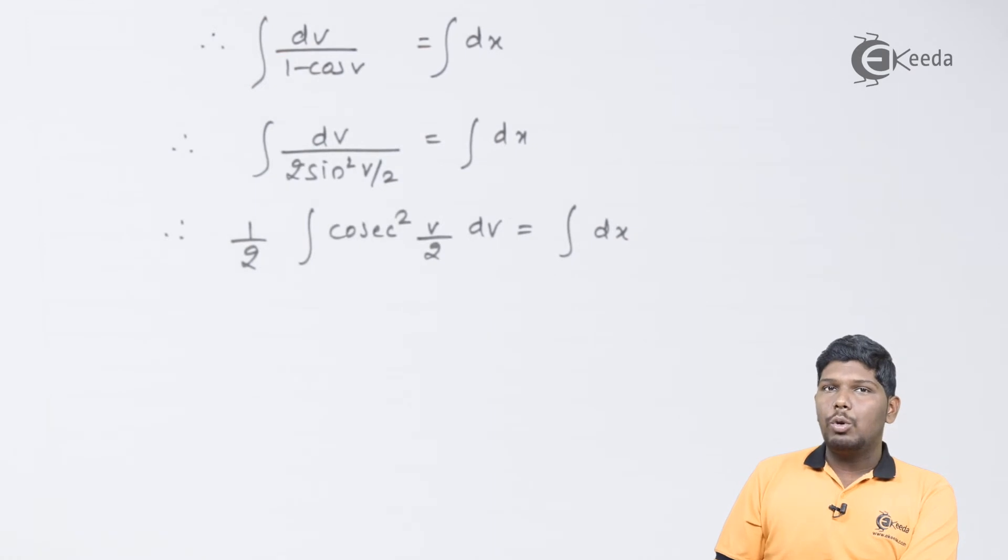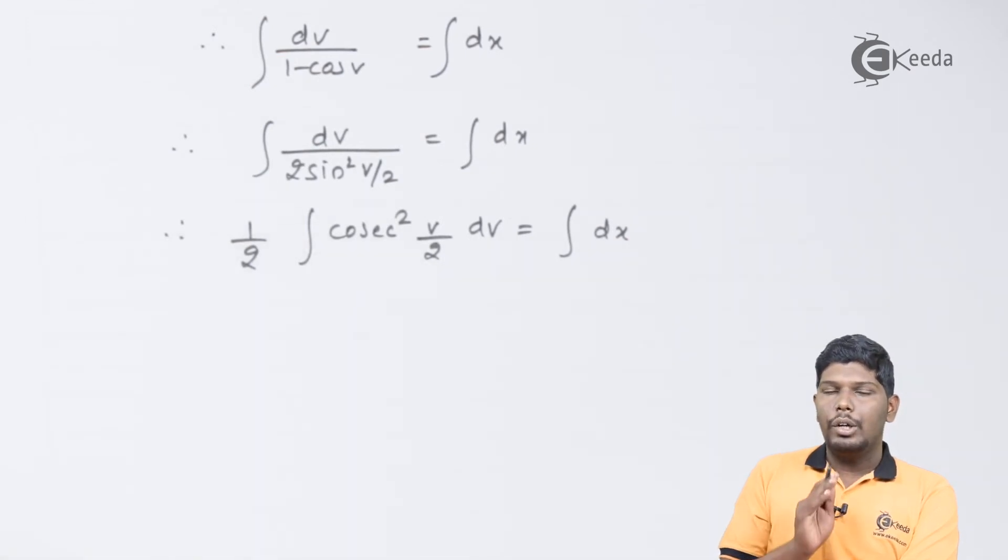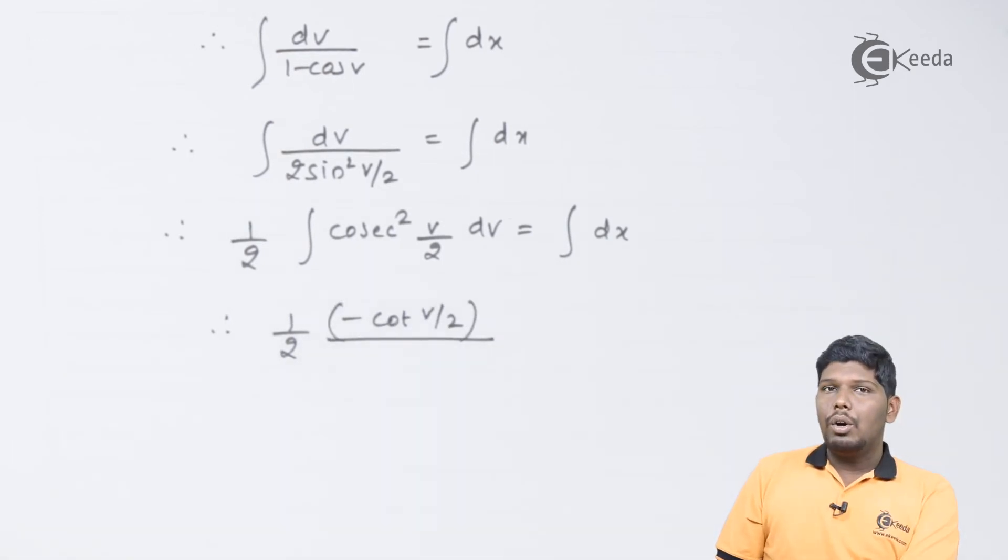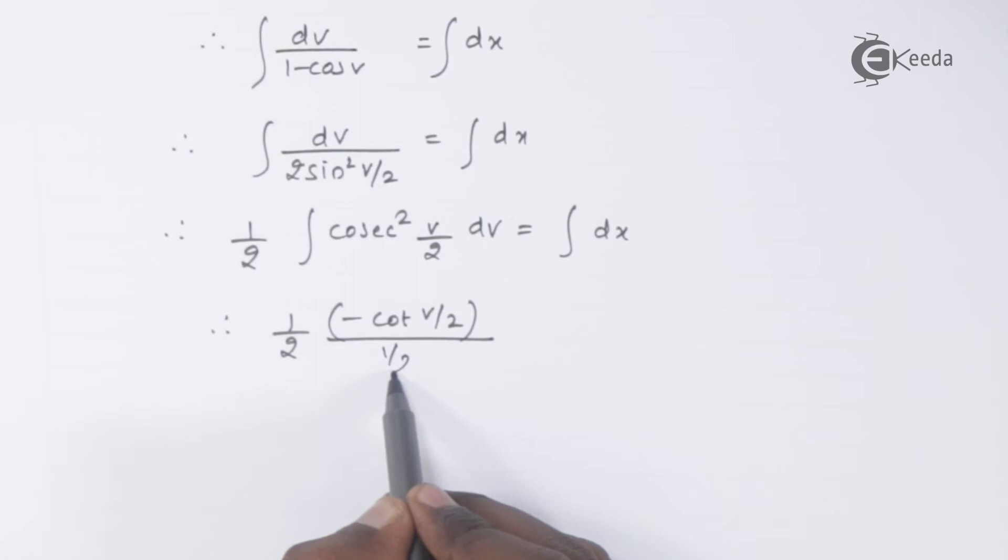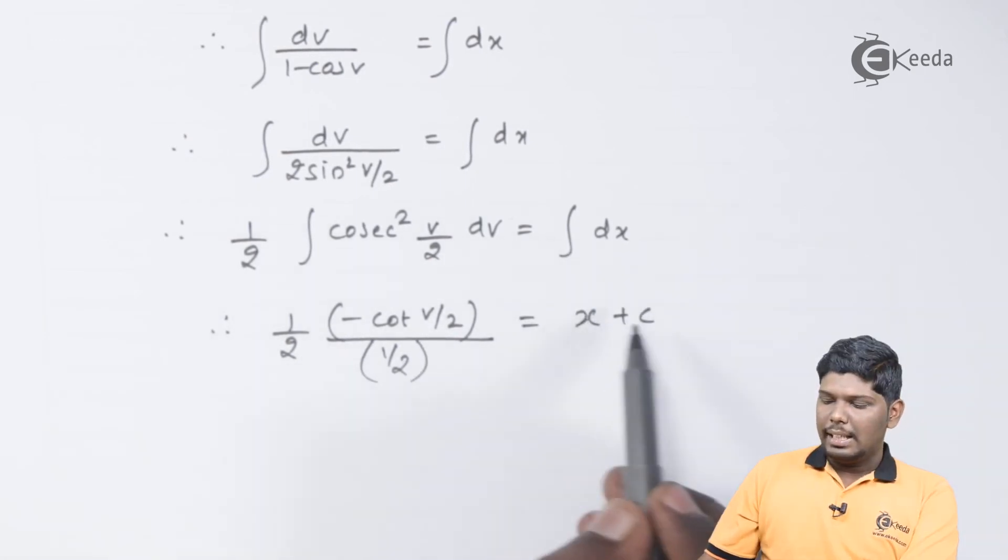Now, we know that integration of cosec square is minus cot, but here this is a composite function. So it will be minus cot divided by derivative of v by 2. What is derivative of v by 2? It is 1 by 2. Integration of dx will be x plus c.